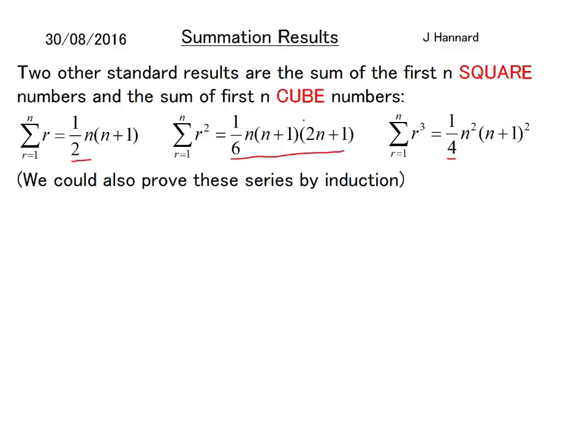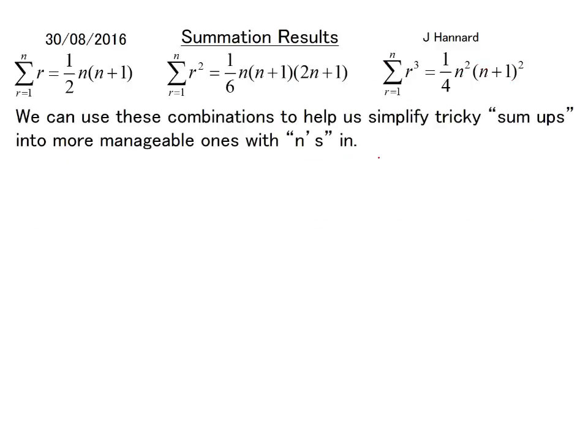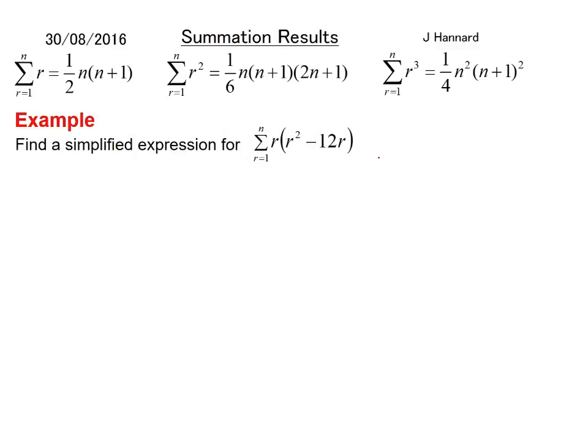Maybe when I go to study a degree it'll become clear. You may also realize that the sum of the first n cube numbers is the square of the sum of the first n natural numbers. We can use these combinations to help us simplify tricky sum-ups into more manageable ones with n's in. We must follow a strict procedure and be confident with our algebra to succeed with it. So here's an example: find a simplified expression for the sum of 1 to n of r times r squared minus 12r.